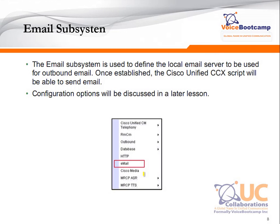The email subsystem will be used to define the local email server to be used for outbound email. Once established, the Contact Center script can then send email to recipients. For example, a customer could call in and say they would like to get a copy of their report, and the Contact Center will take that information, generate a report, and email it back to that customer.